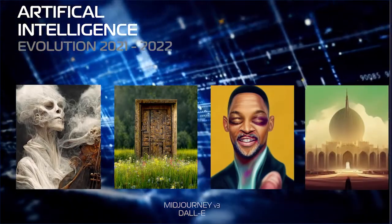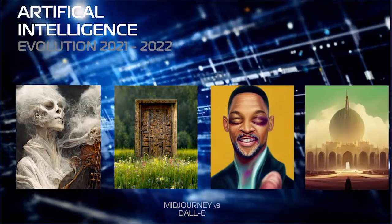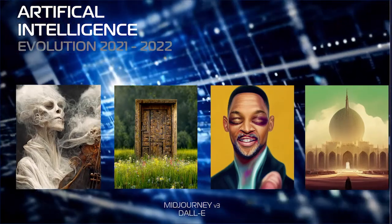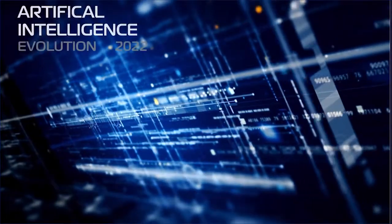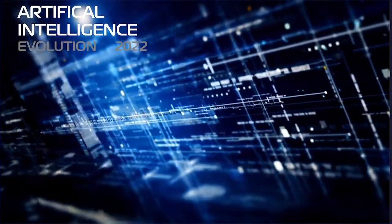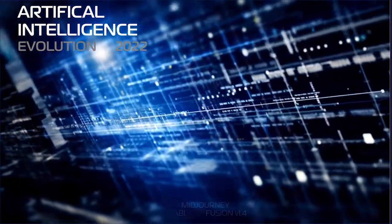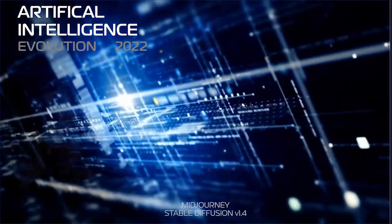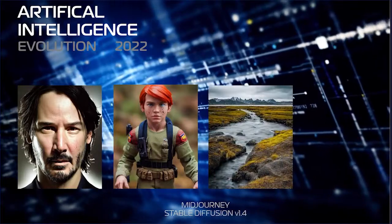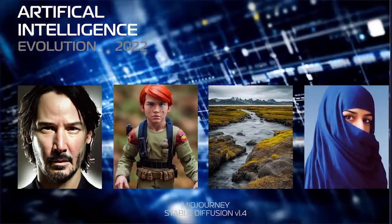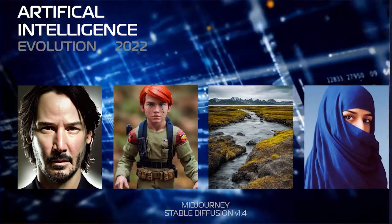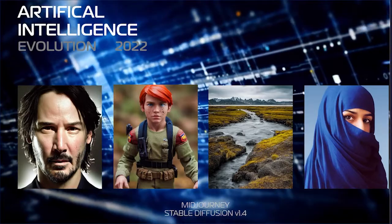MidJourney used a proprietary method to generate images, while GalGAN and Canvas were using the GAN method, and DALL-E uses the CLIP method. Then in late August, Stable Diffusion Model 1.4 was released. MidJourney quickly incorporated this model and began generating amazing photorealistic images.